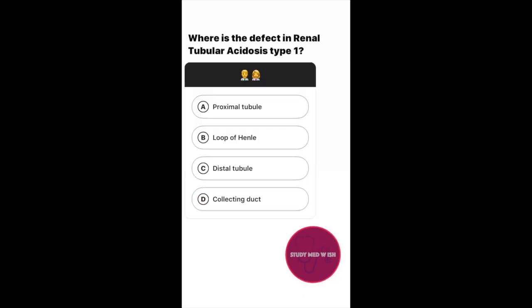Question number four. Where is the defect in renal tubular acidosis type 1? Option A: Proximal tubule. Option B: Loop of Henle. Option C: Distal tubule. Option D: Collecting duct.